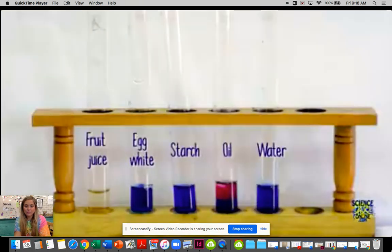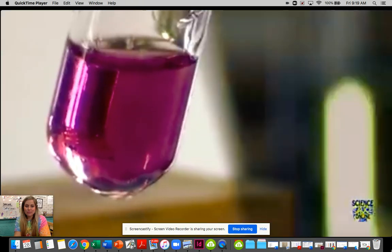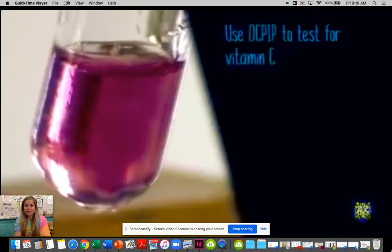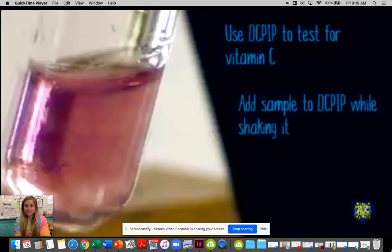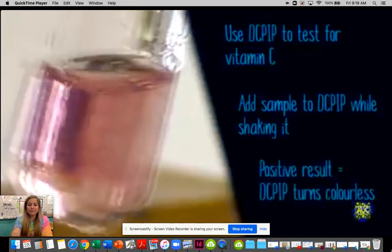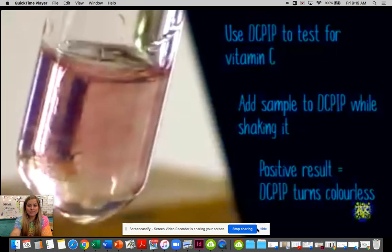When we make a final comparison, we can see that the fruit juice is the only one that has turned the DCPIP colorless. So we use DCPIP to test for the presence of vitamin C. We add our sample to DCPIP while shaking it and the DCPIP will turn colorless if vitamin C is present.